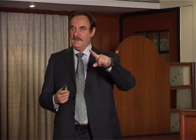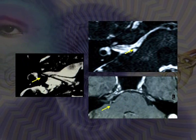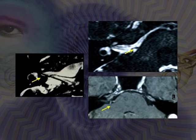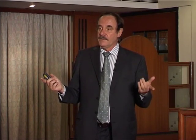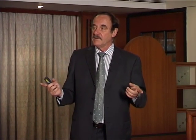In more than 90% of vestibular paroxysmia cases, axial MRI CISS sequence of the eighth nerve shows crossing of the nerve and vessel — usually the anterior inferior cerebellar artery. If the crossing is not seen, vestibular paroxysmia is unlikely. Treatment: try carbamazepine 3 times 200 mg daily. Most patients with several attacks per day become symptom-free within one or two days.